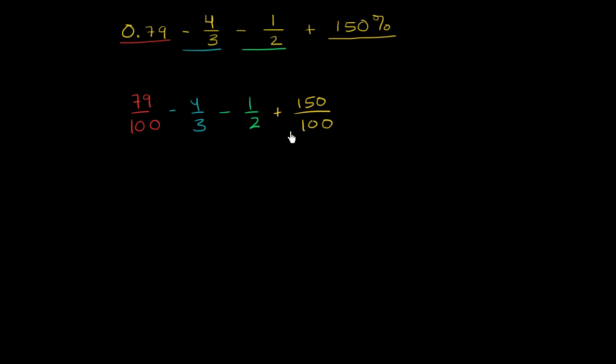So now we've written them all as fractions. And in order to do all the subtraction addition, we have to find a common denominator. So what's the least common multiple of 100, 3, 2, and 100? Well, 100 is divisible by 2. So 100 is actually the least common multiple of 102. So we really have to just find a least common multiple between 100 and 300. And that's just going to be 300. There's no other common factors between 100 and 3. So let's write all of them with 300 and 100 as the common denominator.